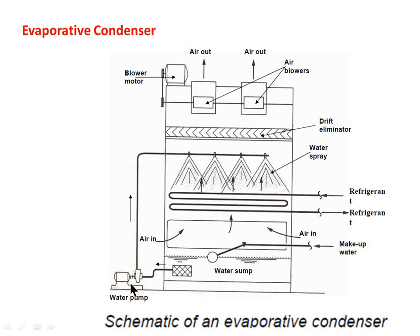A water pump provides water for the spray. Water is pumped from the sump to the spray header and sprayed through nozzles over the condenser coil, through which hot vapor refrigerant from the compressor passes. Heat transfers from the refrigerant through the condensing tube coils into the water wetting the outside surface of the tubes. A fan draws air from the bottom and discharges it at the top, causing water on the coil surface to evaporate and absorb the latent heat of evaporation.